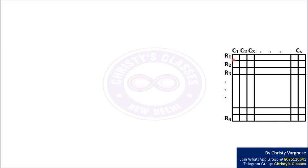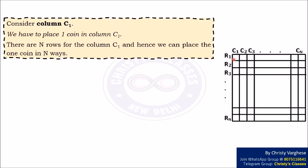Consider column C1. We have to place one coin in column C1. There are N rows for column C1 and hence we can place the one coin in N different ways.